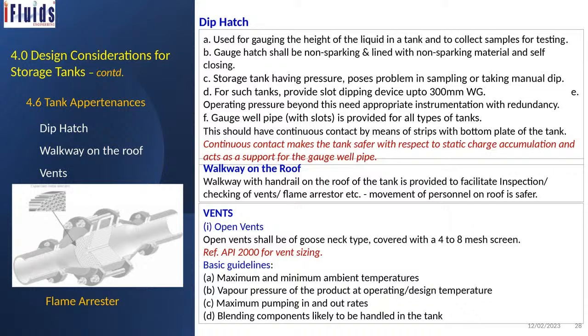The gauge well type is provided for all types of tanks with slots, and should have continuous contact by means of strips with the bottom plate of the tank. This continuous contact makes the tank safer with respect to static charge buildup — a very important safety consideration. A walkway on the roof is provided for inspection, gauging, and checking of vents, flame arresters, etc. The roof walkway is provided with a handrail.